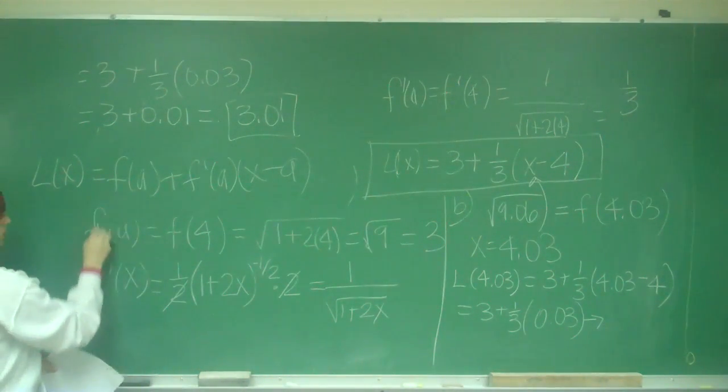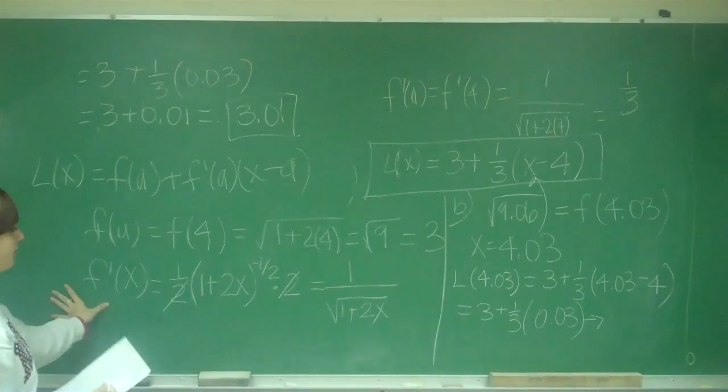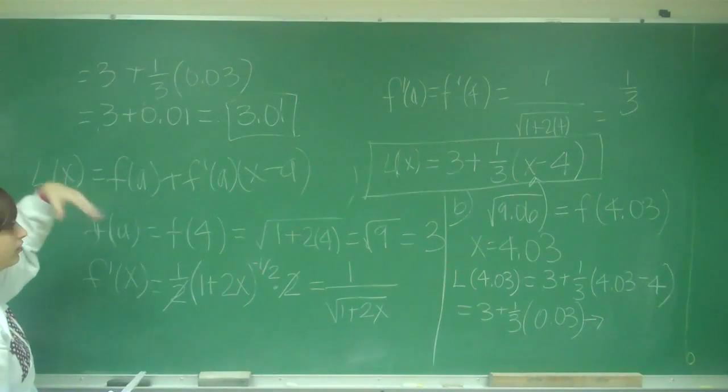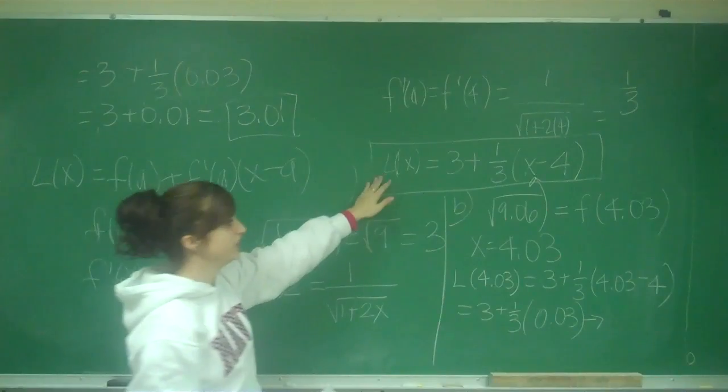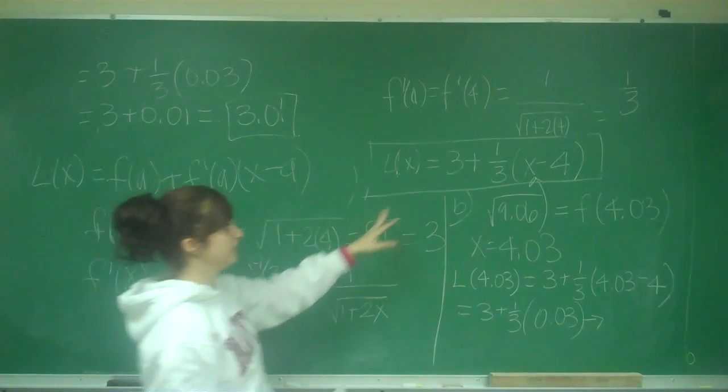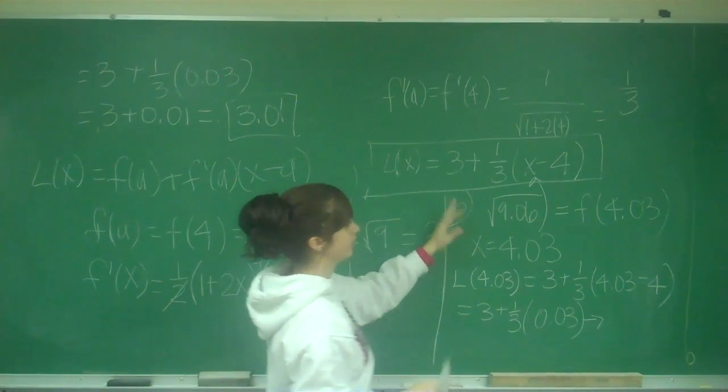We found f(a) first, which was here, which is 3. Then we found f'(x), we found the derivative of the function. Then we plugged in a, so we got a linearization formula. And that's the first part. And like I said, it's usually easier to leave it in this form for the second part.